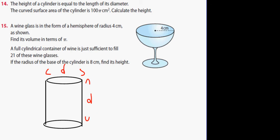Now what's its radius in terms of D? Half of D, D over 2. Now calculate its height. The height of a cylinder is equal to the length of a diameter. The curved surface area of the cylinder...